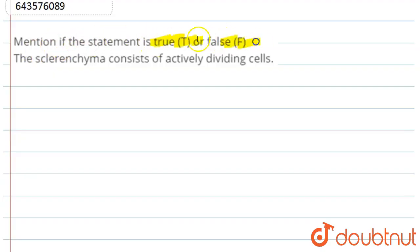the statement is true or false. The statement is: the sclerenchyma consists of actively dividing cells.